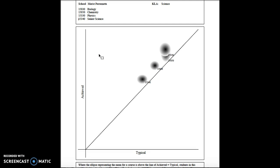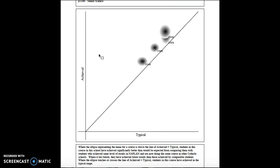What the achieved versus typical looks at is a student's performance on the NAPLAN in comparison to their performance in a certain subject in the HSC.